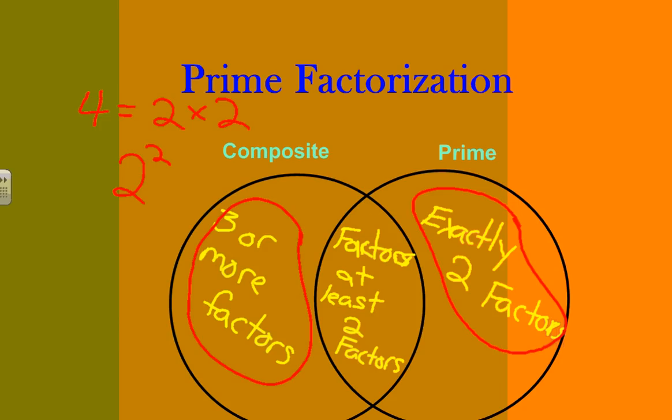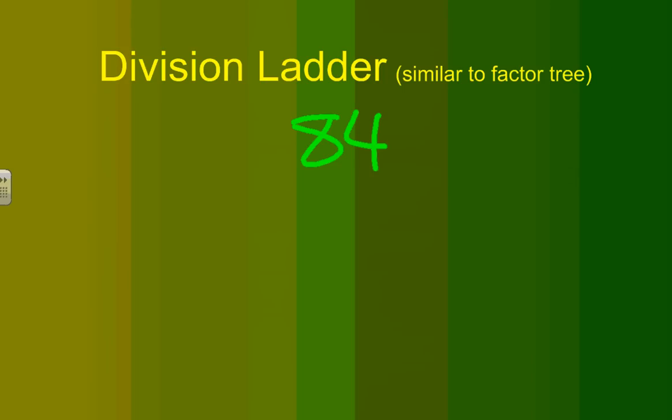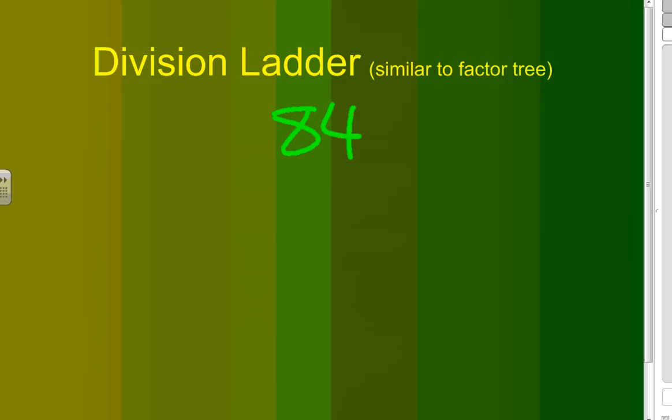Now let's take a look at the ladder. So we move back to our division ladder. This is probably one of the easiest ways to find the prime factorization using the division ladder. So we have 84.